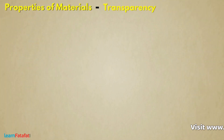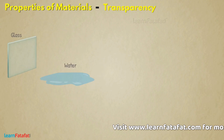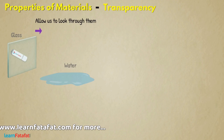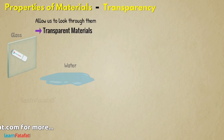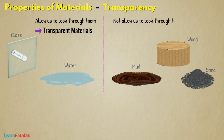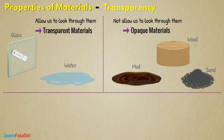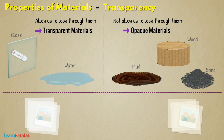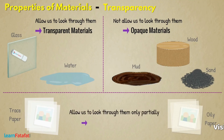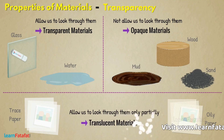Transparency: Some materials such as glass, water, etc. allow us to look through them completely. Such materials are called transparent materials. Some materials such as wood, mud, and sand do not allow us to look through them; these are called opaque materials. There are some materials, for example trace paper, oily paper, etc., which allow us to look through them only partially. Such materials are called translucent materials.